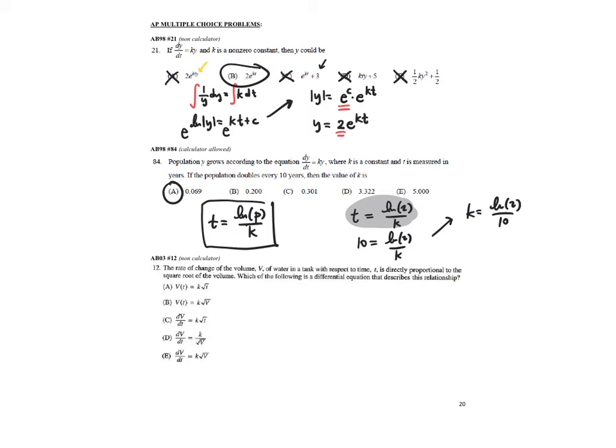AB03 or 2003 number 12. The rate of change of the volume v of the water in a tank with respect to time t is directly proportional, very important, to the square root of the volume. So what I like to do is I like to think of the directly proportional piece will be k times whatever it is they're saying it's proportional to, the square root of the volume.